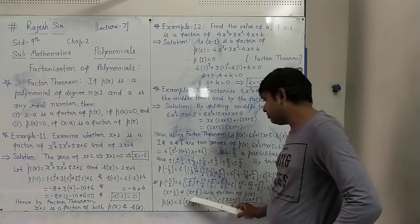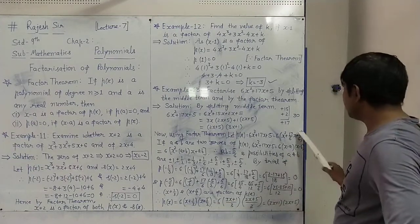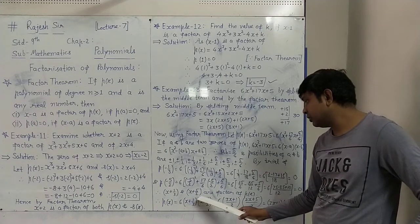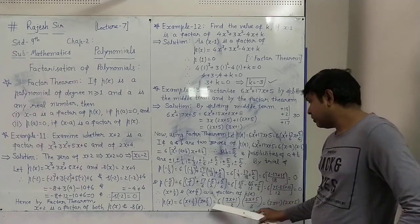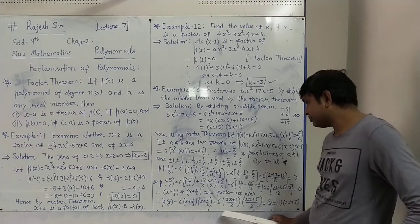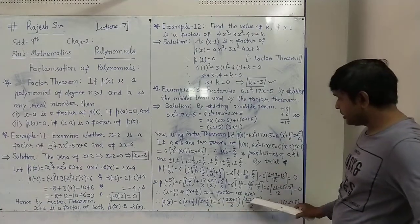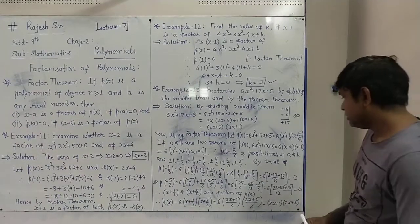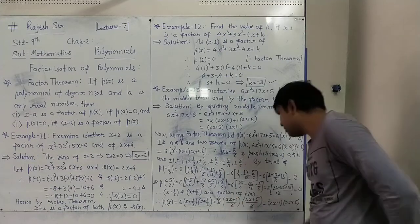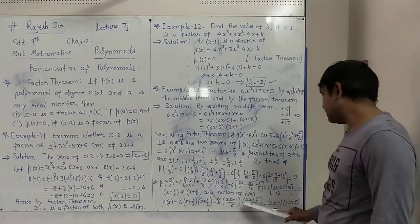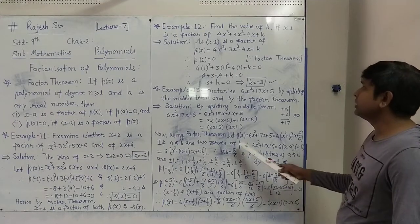Since both are factors of P(x), P(x) equals 6 times (x plus 1/3)(x plus 5/2). In the first bracket, 3 is the LCM, so it becomes (3x plus 1) over 3. In the second bracket, 2 is the LCM, so it becomes (2x plus 5) over 2. Then 6 divided by 3 times 2 cancels, giving P(x) equals (3x plus 1)(2x plus 5).